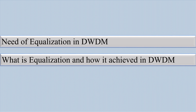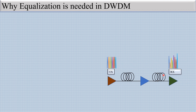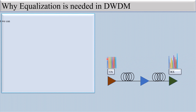Let's see what is the need of equalization. This is the basic DWDM system — you can see the fiber, the transmission end, and the receiver. These are the multiple wavelengths being transmitted through the fiber and received at the receiver. When any light pulse travels through the fiber medium, it faces multiple issues like scattering and attenuation. Different wavelengths face different attenuation and different scattering when passing through the same fiber medium — meaning this single medium affects different wavelengths differently.